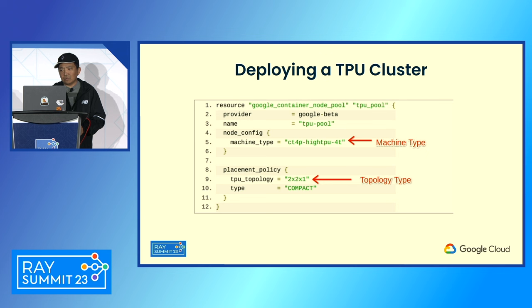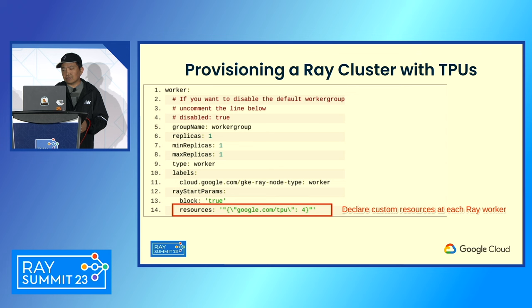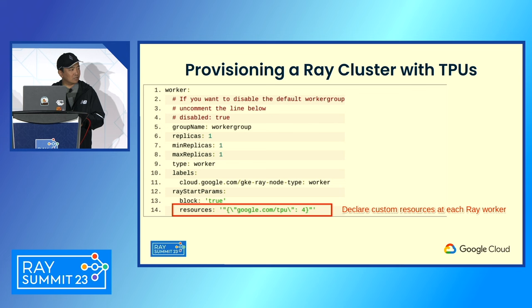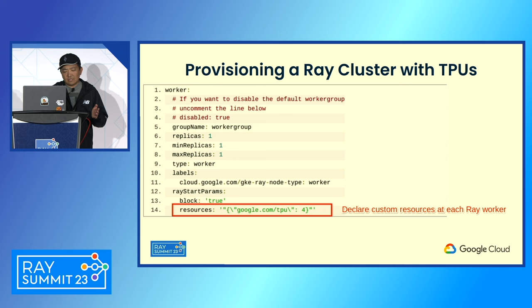Here is a simple Terraform snippet that talks to Google Kubernetes Engine to provision a TPU node pool with a specific topology type. Behind the scenes, GKE will spin up the VMs, create the node pool, and install the TPU drivers and device plug-in on the worker containers. Next, we use KubeRay to make the user experience for provisioning a cluster as straightforward as possible. This is a Ray worker spec — we initialize the worker by declaring the number of TPU resources available on each worker. After the next Ray release, we are planning to make TPUs a natively-supported resource, so this step should no longer be necessary.